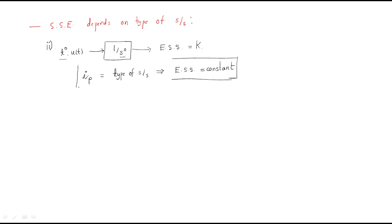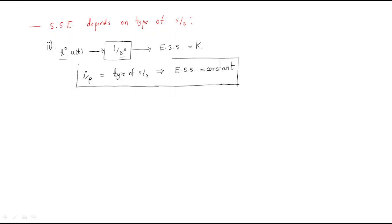This is another important point: when the type of the input is equal to the type of the system, the steady-state error will become constant.